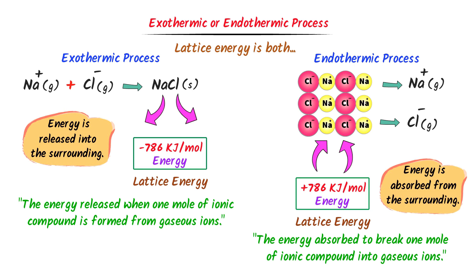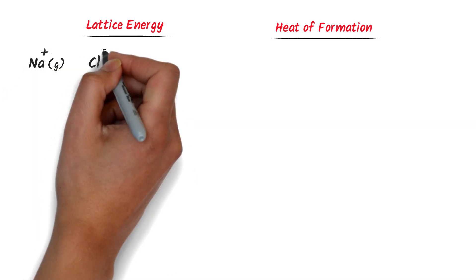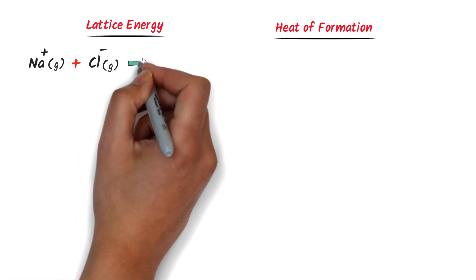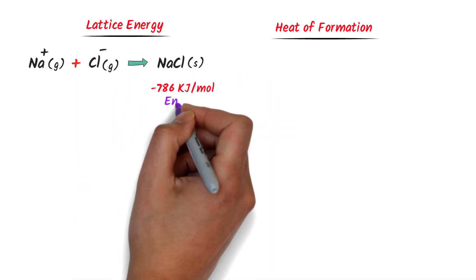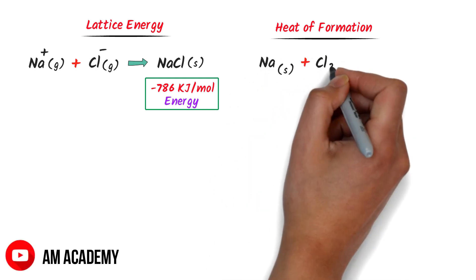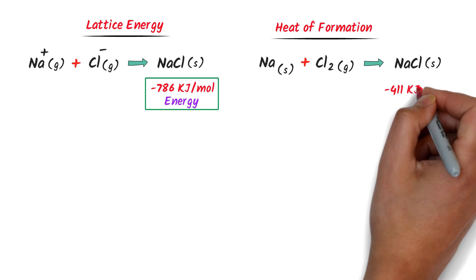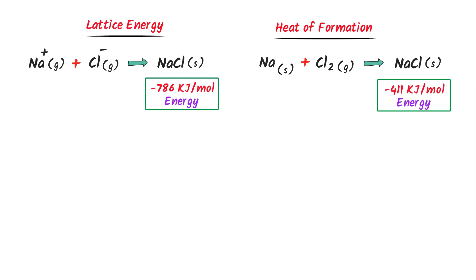Finally, let me teach you one bonus concept: What is the difference between lattice energy and heat of formation? When sodium ion in gaseous state and chlorine ion in gaseous state react together to form sodium chloride, they release 786 kilojoules per mole of energy, which is known as lattice energy. On the other hand, when sodium atom in solid state reacts with one chlorine atom in gaseous state to form sodium chloride, they release 411 kilojoules per mole of energy.